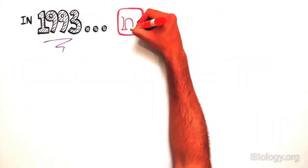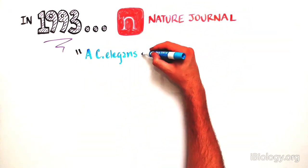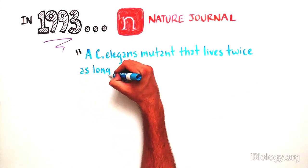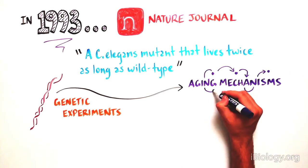These findings were published in 1993 in Nature in an article titled, A C. elegans mutant that lives twice as long as wild-type. Thanks to these genetic experiments, scientists could begin studying the molecular mechanism of aging.